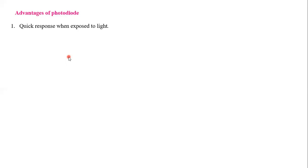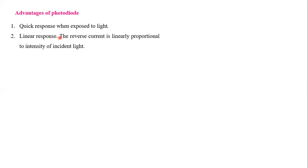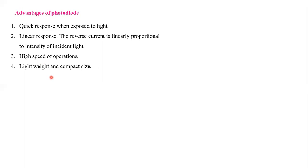Now let's see the advantages of the photodiode. First, it has a very quick response when exposed to light — when light is incident, it responds immediately with no time lag between the current and the incident light. Second, there is a linear response: as seen in the graph, the reverse current is linearly proportional to the intensity. Third, it has a high speed of operation — if we disturb the light for even a fraction of a second, we can observe a change in the current.